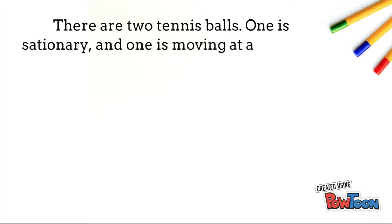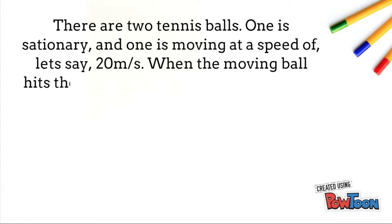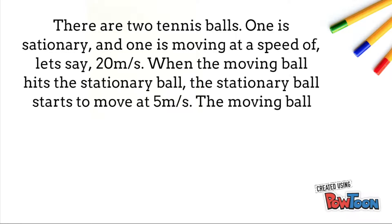There are two tennis balls. One tennis ball is stationary so it has zero momentum. The other tennis ball is moving with a direction so it has a momentum of, let's say, 20 meters per second. This means that the total momentum before the tennis balls collide is 20 meters per second.